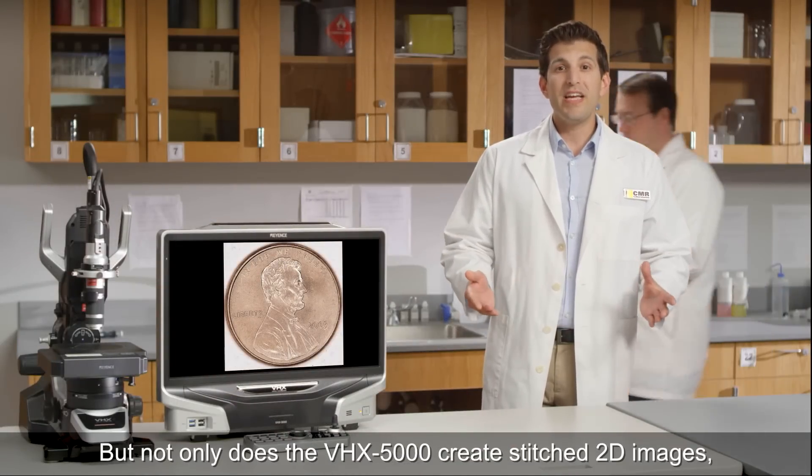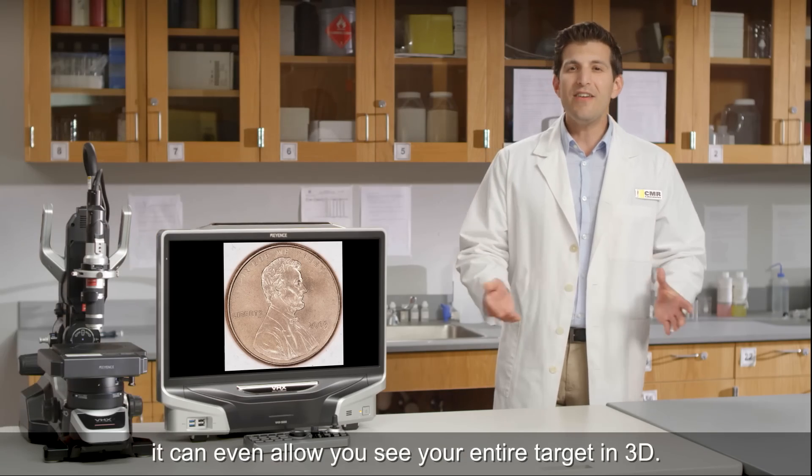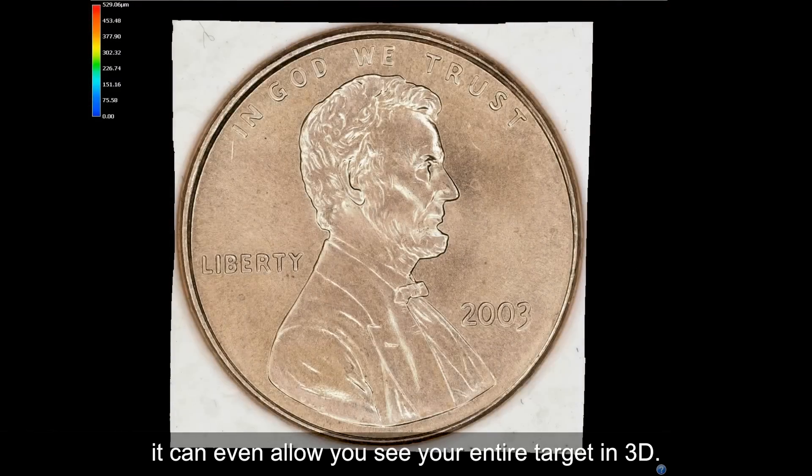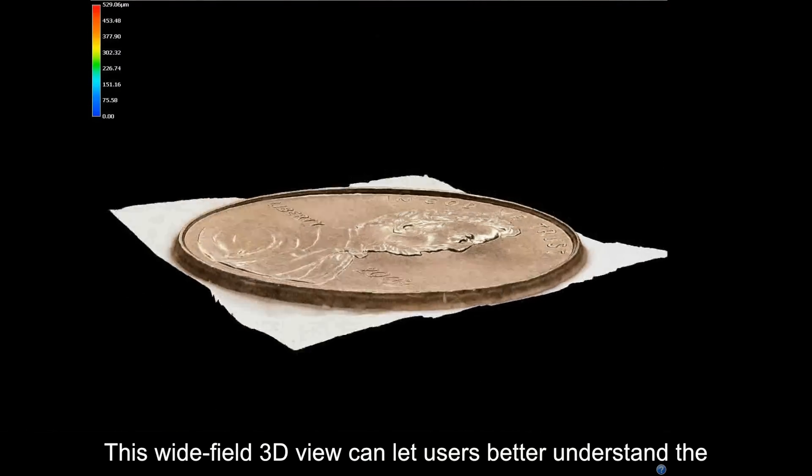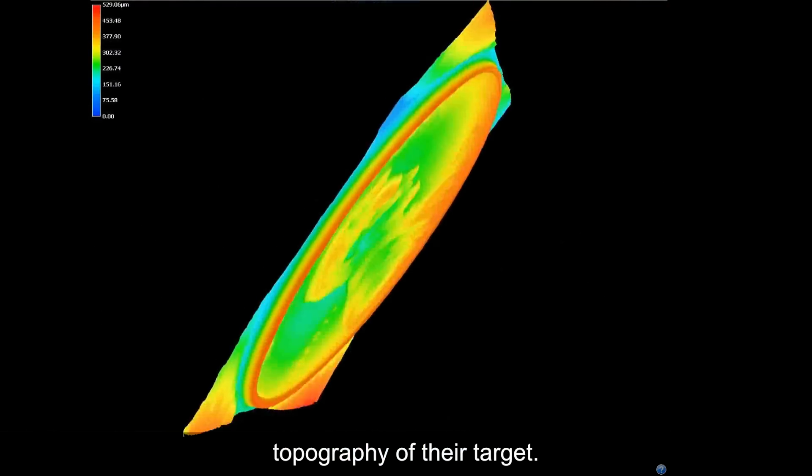But not only does the VHX5000 create stitched 2D images, it can even allow you to see your entire target in 3D. The wide-field 3D view can let users better understand the topography of their target.